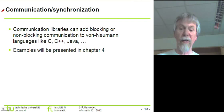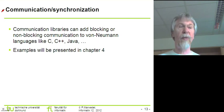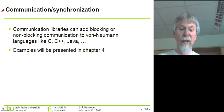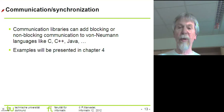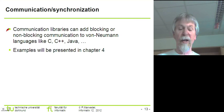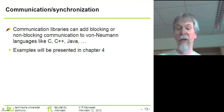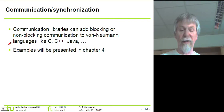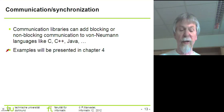Other languages can also be used to communicate between different processes. In many languages these communication primitives are not built into the language itself but can be added using libraries. There are many communication libraries that make blocking or non-blocking communication available in von Neumann languages, such as those available for C, C++, or Java. Some examples will be presented in chapter 4.